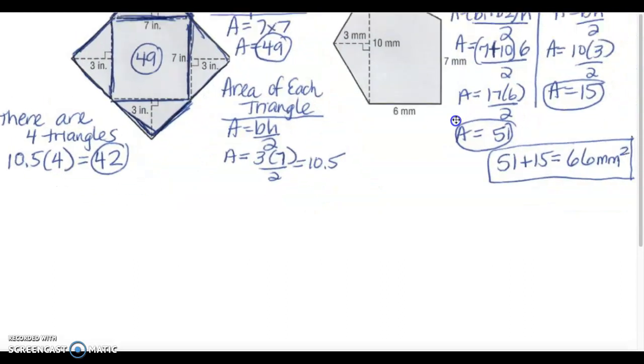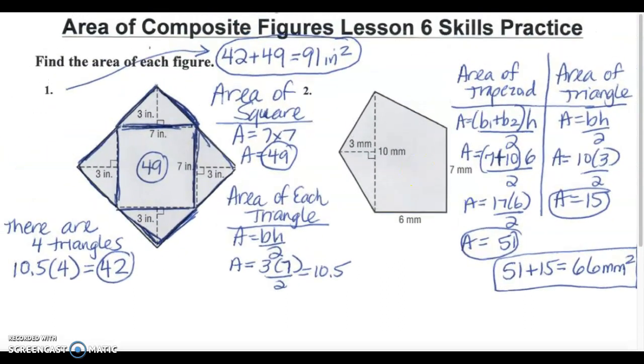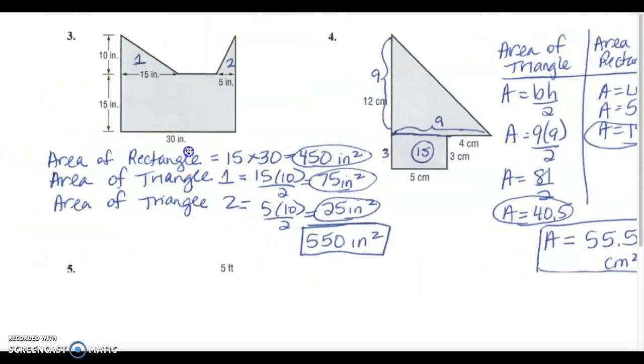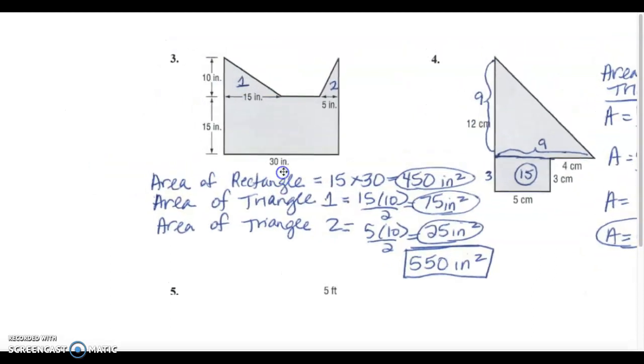Let's look at problem number three. I see that there were two triangles and a rectangle. Let's do the rectangle first. The rectangle has a length of thirty and a width of fifteen. So thirty times fifteen gives me 450.